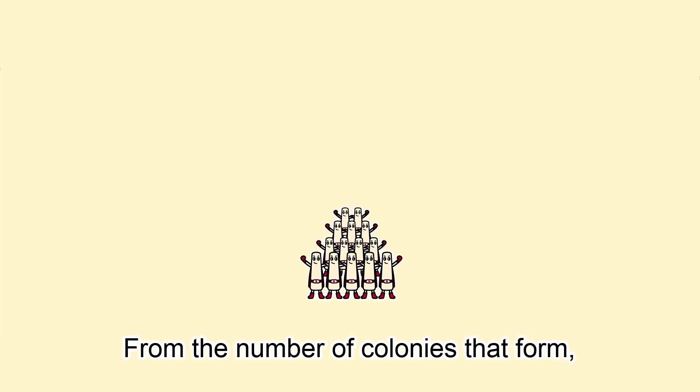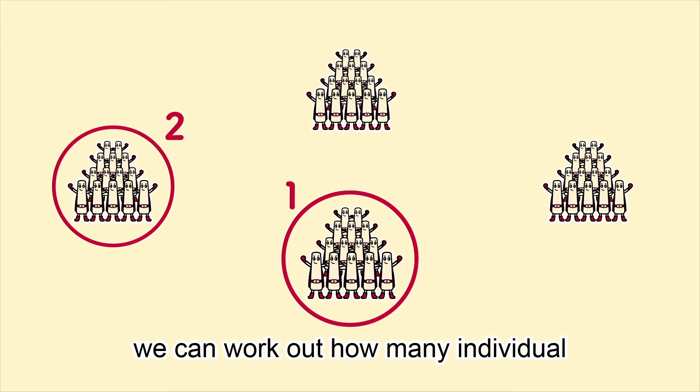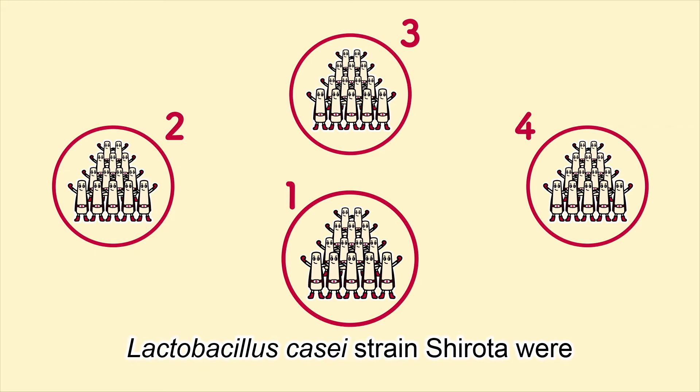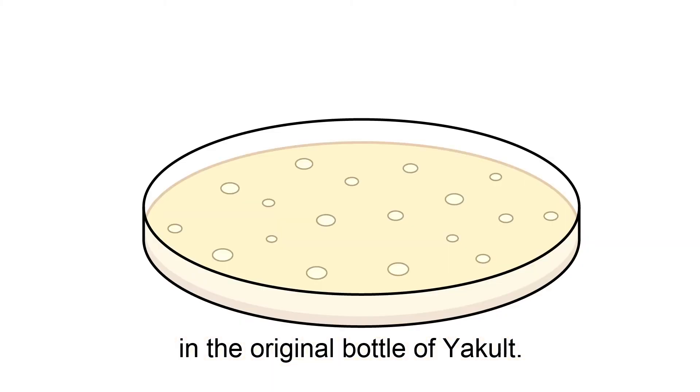From the number of colonies that form, we can work out how many individual Lactobacillus casei strain Shirota were in the original bottle of Yakult.